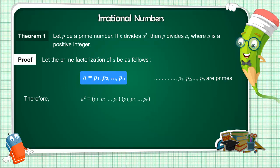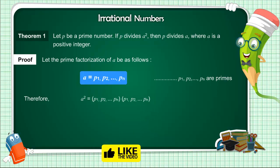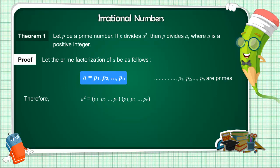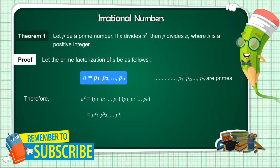Therefore, A squared equals (P1 · P2 · ... · Pn) × (P1 · P2 · ... · Pn), which equals P1² · P2² · ... · Pn².